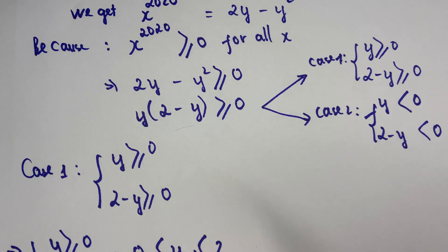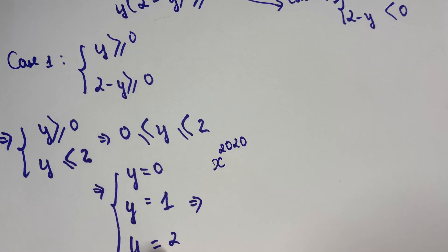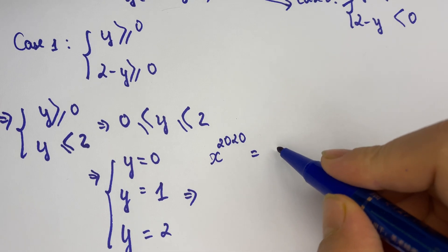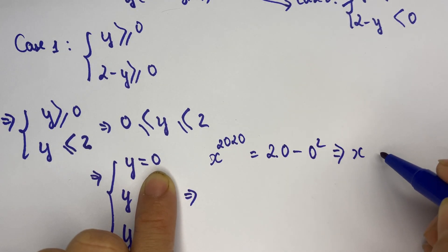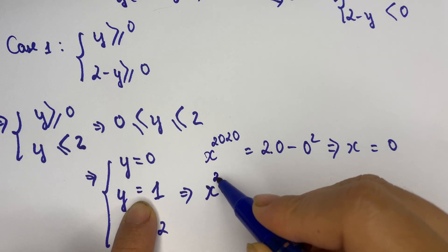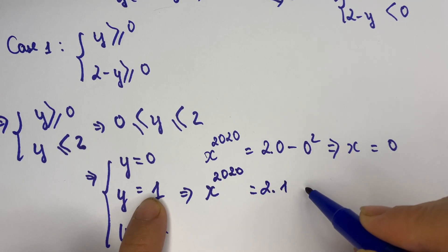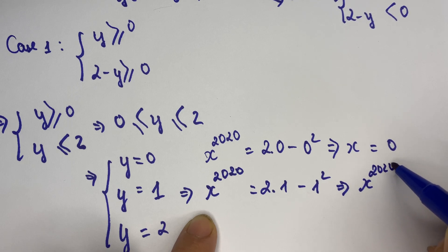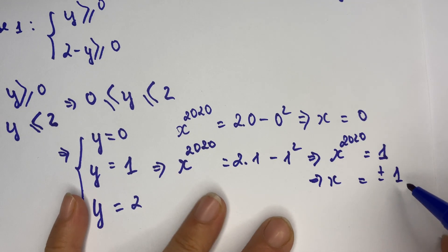For y equals zero, x to the power 2020 equals 2 times 0 minus 0 squared equals zero, so x equals zero. When y equals one, x to the power 2020 equals 2 times 1 minus 1 squared equals one, so x equals plus or minus one.